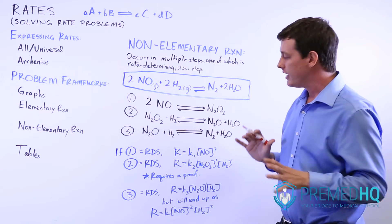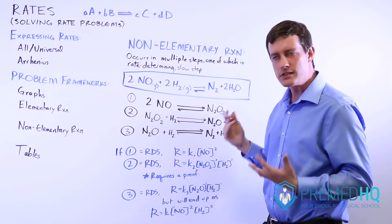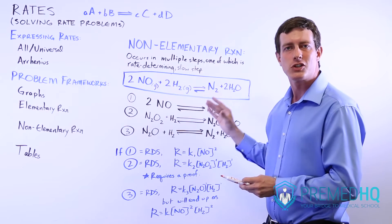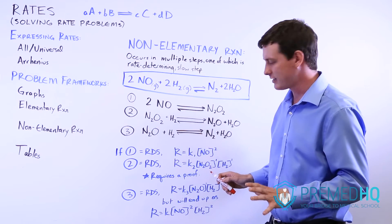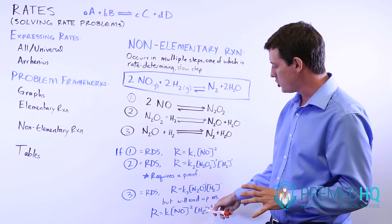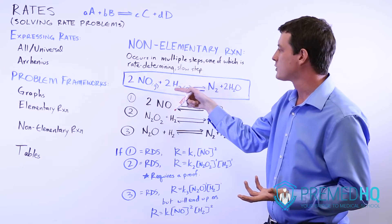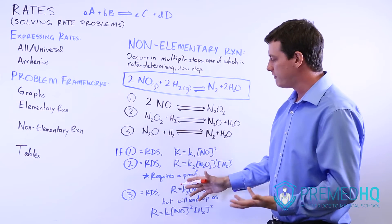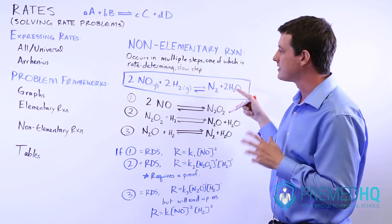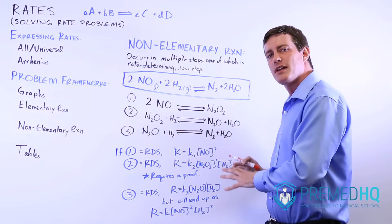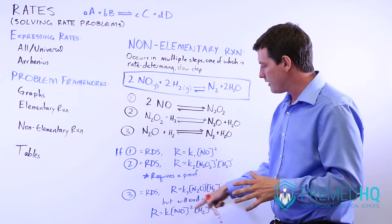The nice thing is that if the final step of a non-elementary reaction is the rate-determining step, you can do a proof and show that the stoichiometry actually does hold. So for this one, you could end up writing the rate as K observed times NO to the second power times H2 to the second power. Notice that's what you would get if this were an elementary reaction — you just raise each reactant to its stoichiometry. So it's not immediately an acceptable expression, but the stoichiometry ends up holding.